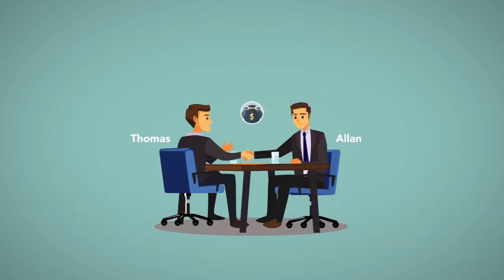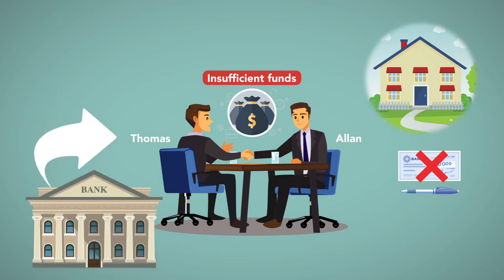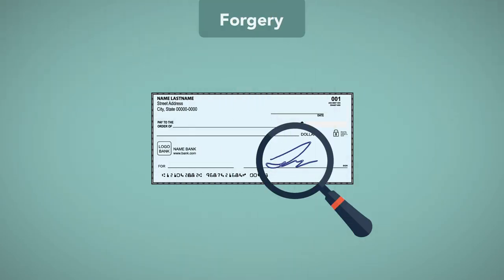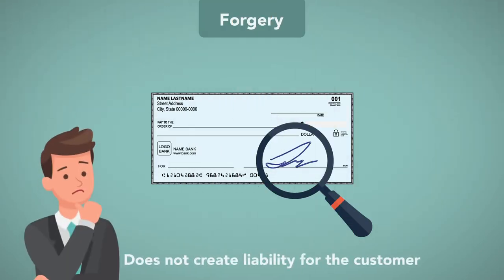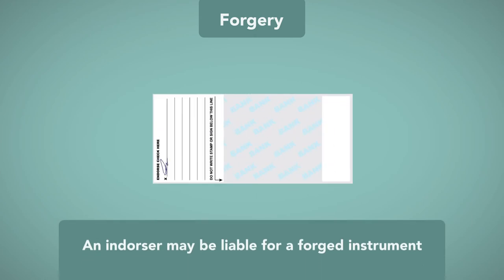For example, Thomas and Allen are business partners with a joint checking account. Allen writes a check to make a mortgage payment on his home. Assume the check is dishonored because the account did not have sufficient funds and the bank seeks to collect a fee from Thomas. Since Thomas neither signed the check nor benefited from its issuance, he would not be liable to the bank. An unsigned instrument or a forgery is not properly payable and does not create liability for the customer. A forged drawer's signature does not create a validly payable instrument, but an endorser may be liable for a forged instrument.